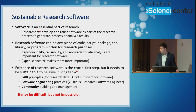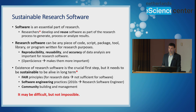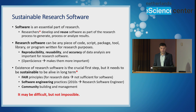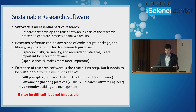What makes research software partly different from other software? There are some important characteristics such as reproducibility, reusability, and accuracy of results. At this point we should also open a parenthesis for open science, because open science practices and principles make these characteristics more and more important. Nowadays, when we develop research software, we try to be careful about these characteristics.